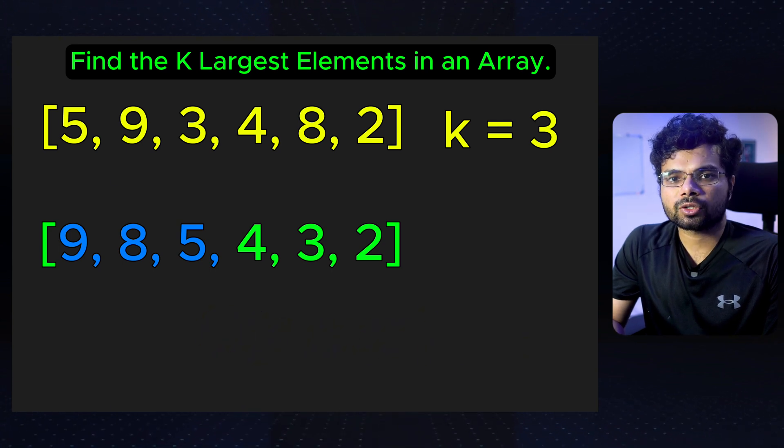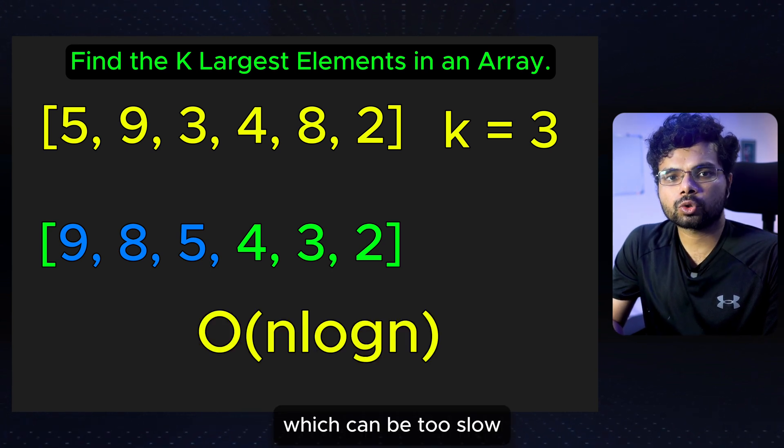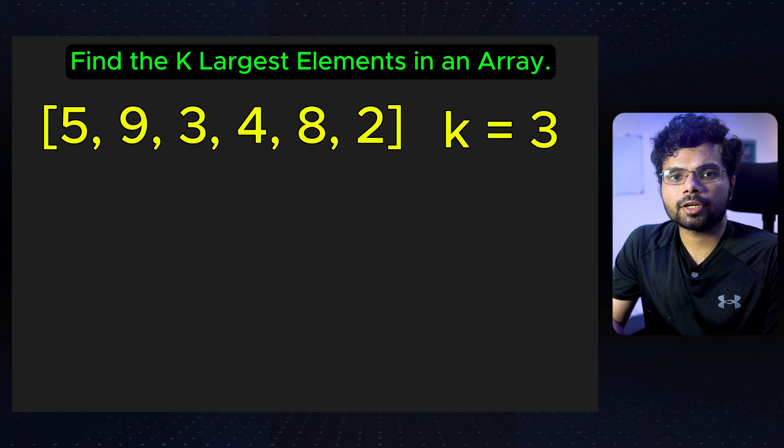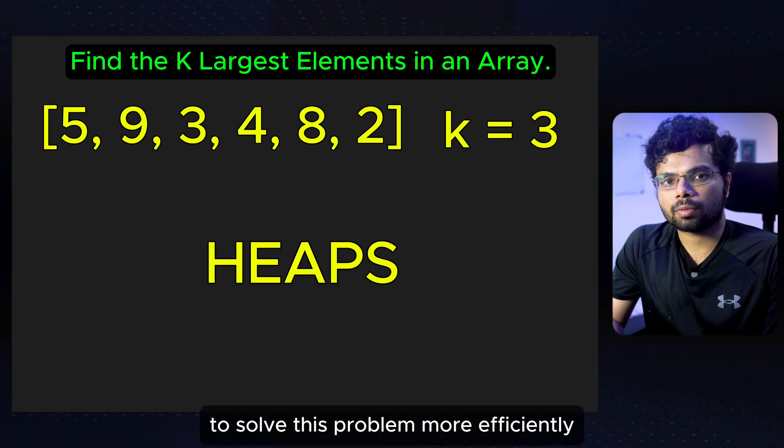The simplest approach is to sort the array in descending order and take the first k elements. However, sorting the array takes O(n log n), which can be too slow for large datasets. We can use heap data structure to solve this problem more efficiently.